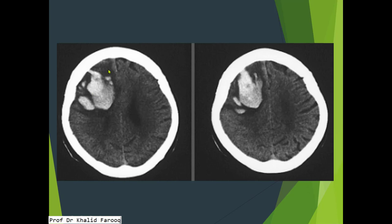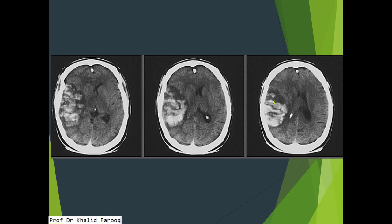The high density area is located in the right frontal-parietal lobe anteriorly, while the surrounding low density area suggests associated edema. Here is another example showing the temporal-parietal lobe with brain parenchymal hemorrhage and surrounding low density edema. Similarly, we can see brain parenchymal hemorrhage with surrounding mild edema.